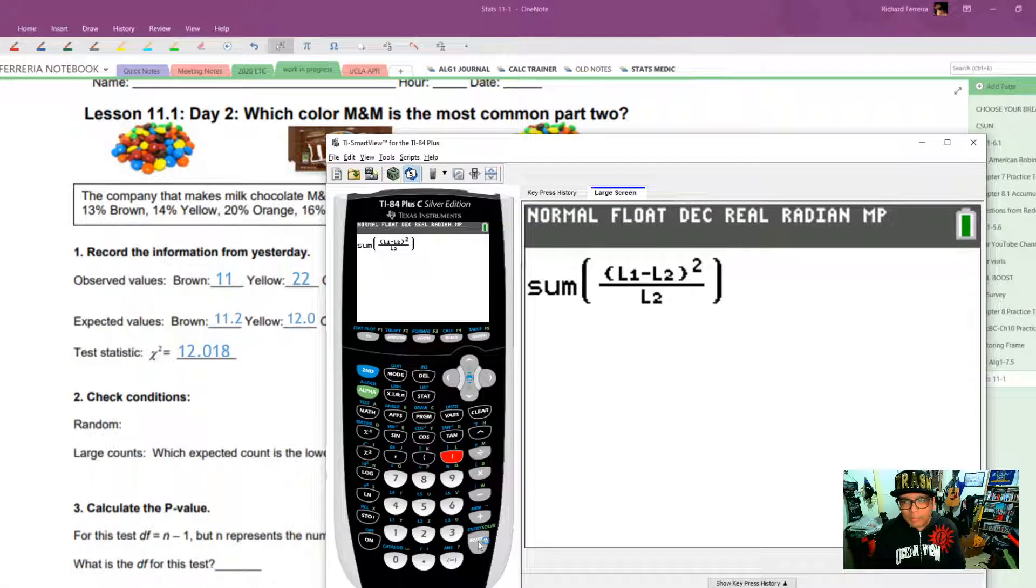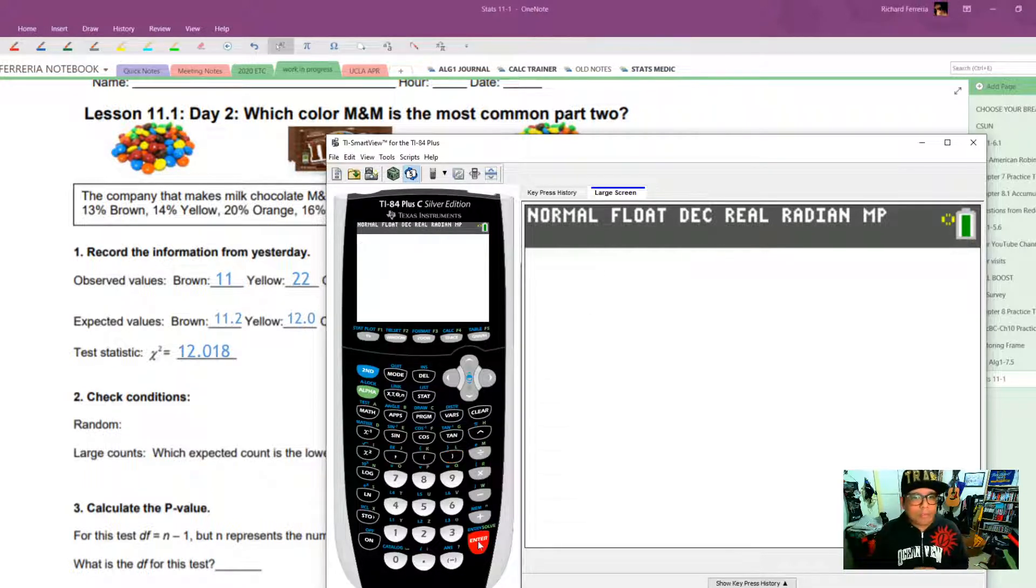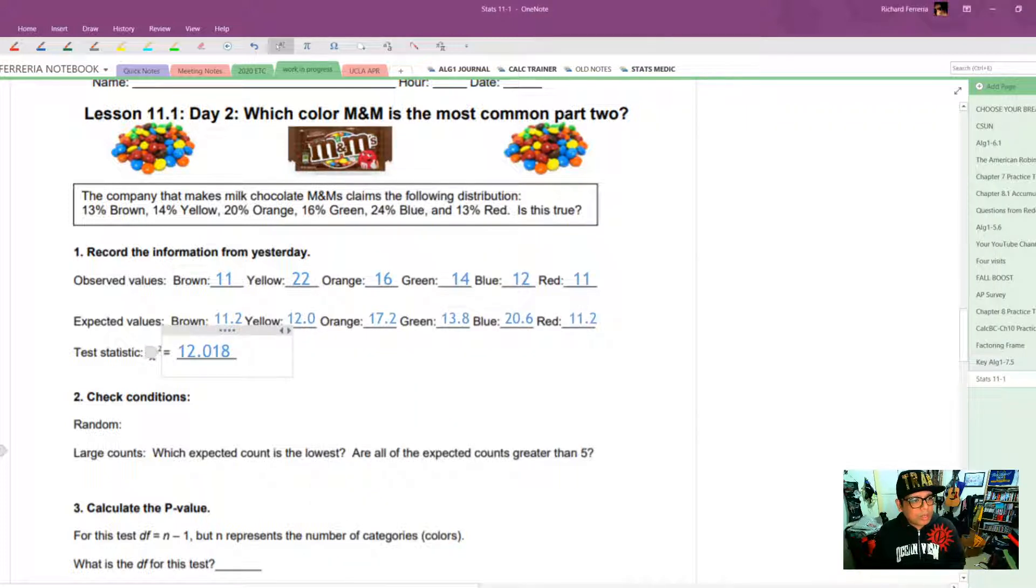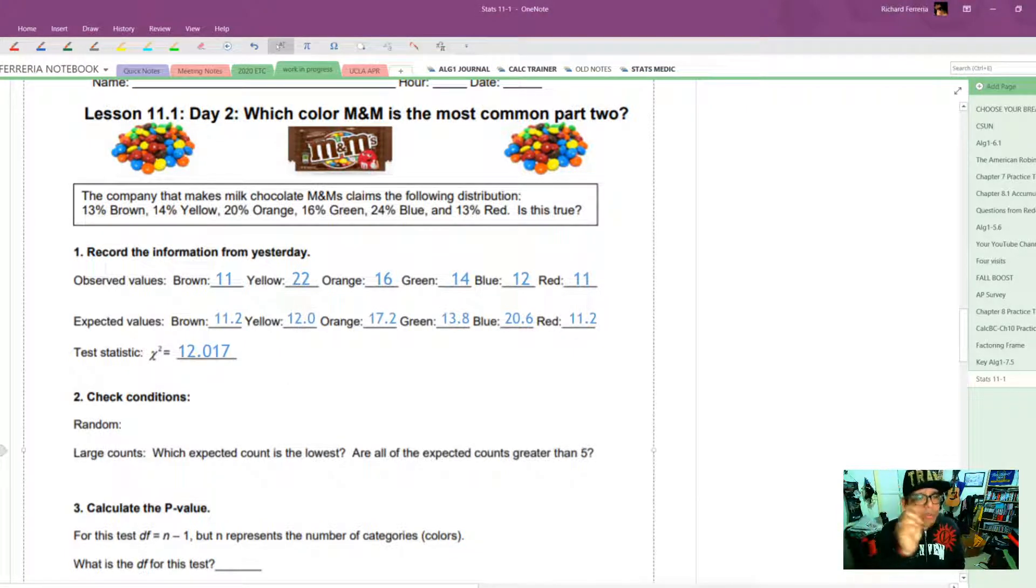Then we want to divide by L2. And then close that off with a parenthesis. This is the command that will give you your chi-square test statistic pretty quickly. So it looks like we should get 12.017, which means I'm just a little bit off here. 12.017. So there you go. Check that off the list if this is one of the important things you want to do. That's how we find the chi-square test statistic using our TI-84.